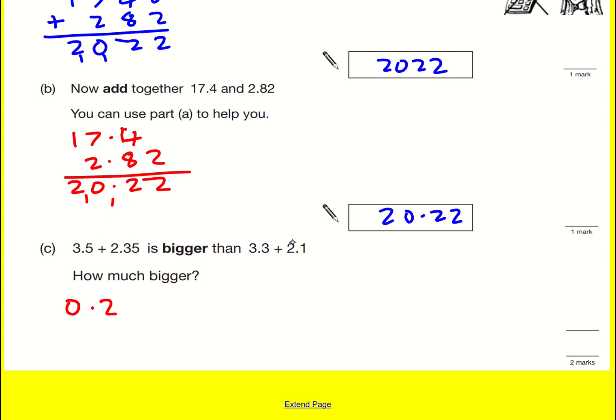And then 2.35 and 2.10, well actually 2.35 is 0.25 bigger. So overall it's going to be 0.45.